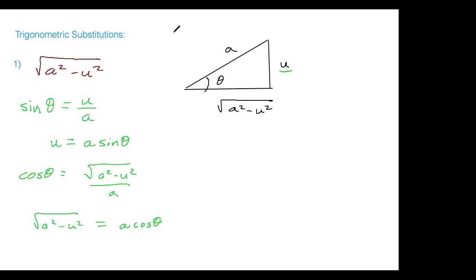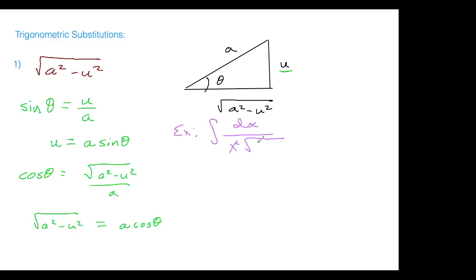Let's do a quick example to check this out. We'll then get the other two patterns without intervening examples so we can examine integrals and identify which pattern applies. The integral is dx over x² times √(9 - x²). Since we only know one trigonometric substitution pattern so far, this is obviously the one to use.